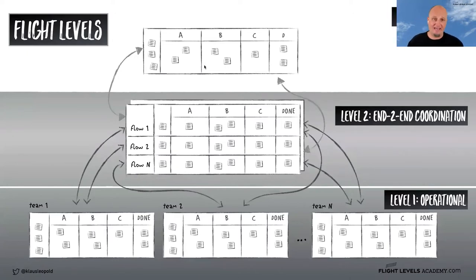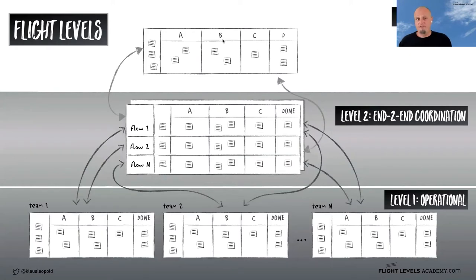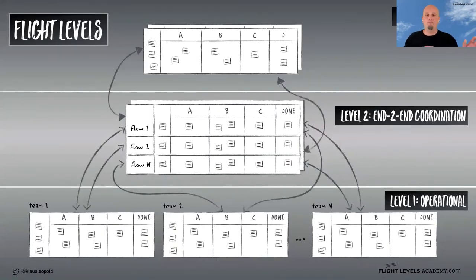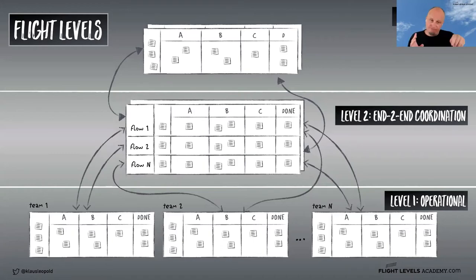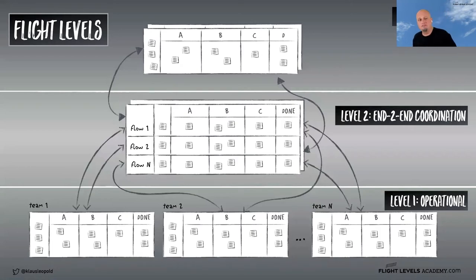We connect the flight level three system to the flight level two, and even to the flight level one systems. Also on the strategy level, we apply the five activities: visualize, create focus, establish interactions, measure progress, and operate and improve. The main point is we need to apply agile — these five activities — on each level: level one (operational), level two (end-to-end coordination), and level three (strategy). It's not about better or worse; each level addresses a different problem.